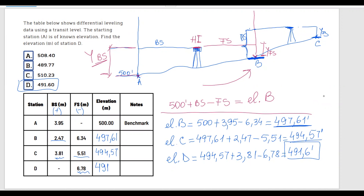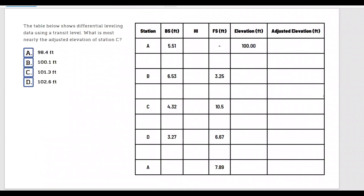As you can see, this is not complicated at all. Once you understand the concept I drew, it's very easy to solve. Now let's go to our next example. The table below shows differential leveling data using a transit level. What is most nearly the adjusted elevation of station C? We have to calculate the adjusted elevation because when we do these measurements, there's usually an error, and we have to adjust for it.